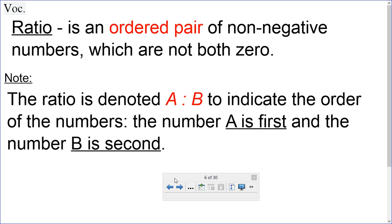Note, the ratio is denoted by A colon B to indicate the order of the numbers. The number A is first, and the number B is second. So, that's your order.